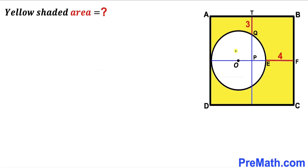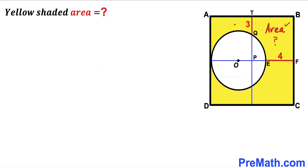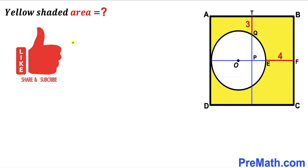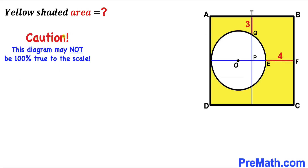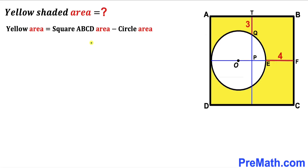Welcome to pre-math. In this video we have a circle with center O fully confined in a square ABCD. This square has been divided into four quadrants with origin P. Segment EF is four units and segment QT is three units. Our task is to calculate the area of the yellow shaded region. Please give a thumbs up and subscribe. Note this figure may not be 100% true to scale.